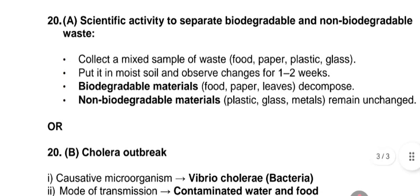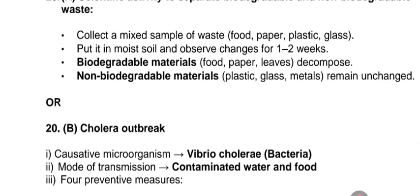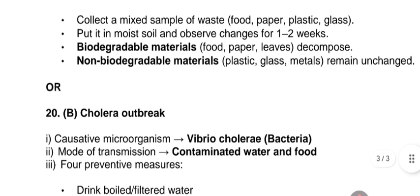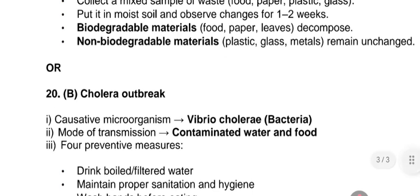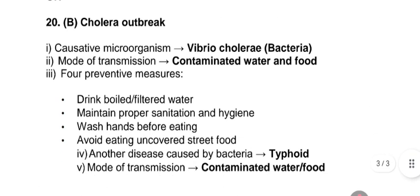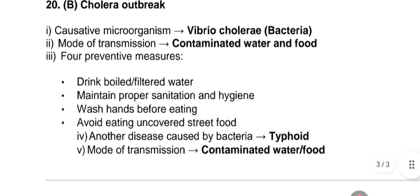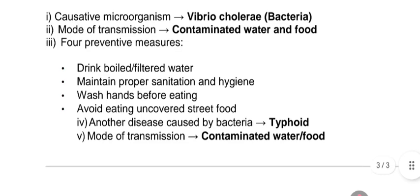Long answer question 20A: describe a scientific activity to separate biodegradable and non-biodegradable waste. Collect a mixed sample of waste — food, paper, plastic, glass — put it in moist soil and observe changes for one to two weeks. Biodegradable materials like food, paper, and leaves decompose; non-biodegradable materials like plastic, glass, and metals remain unchanged. Alternatively, question 20B: cholera outbreak — causative microorganism: Vibrio cholerae (bacteria); mode of transmission: contaminated water and food.